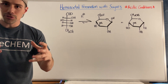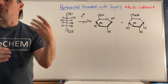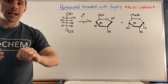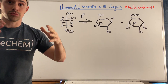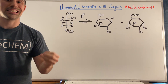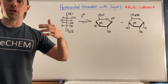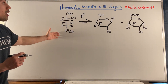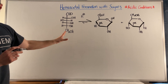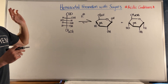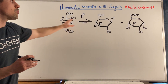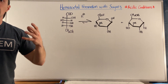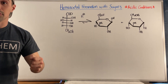These Fischer projections, while they're convenient to look at and convenient to draw, in actuality, in nature especially, sugars love existing in a cyclic structure. While they do exist in a straight chain form some of the time, overwhelmingly there's an equilibrium that majorly favors the cyclic form of carbohydrates - monosaccharides.